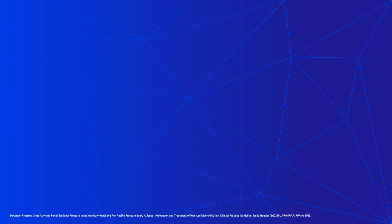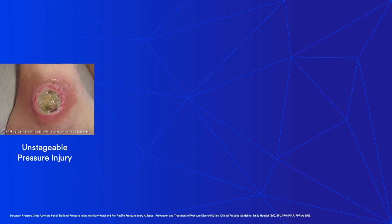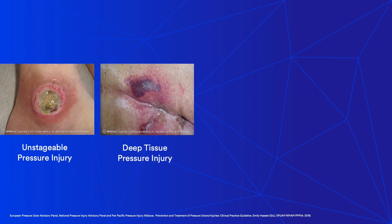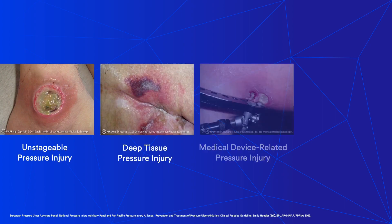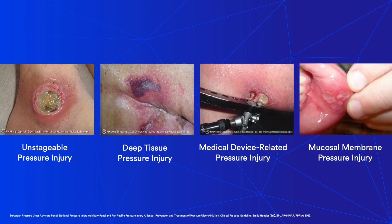Some pressure injuries may be described as unstageable, deep tissue, medical device-related, and mucosal membrane pressure injuries. Let's discuss each in more detail.